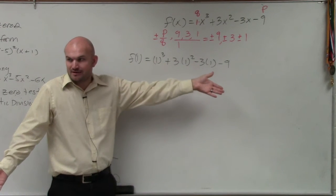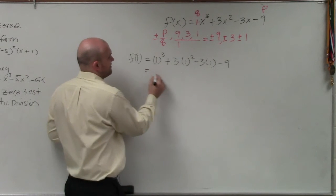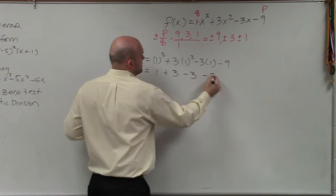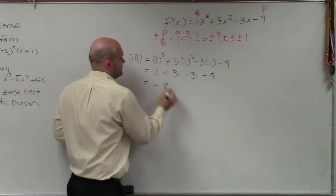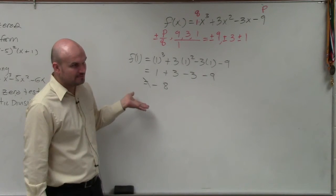Then you can use synthetic division. If it doesn't, then that's a remainder. So let's go and simplify this. That's one plus three minus three minus nine. Doesn't work. Could you guys also do that with negative one? Yes.